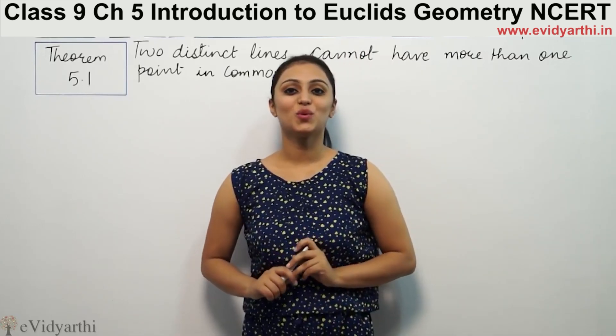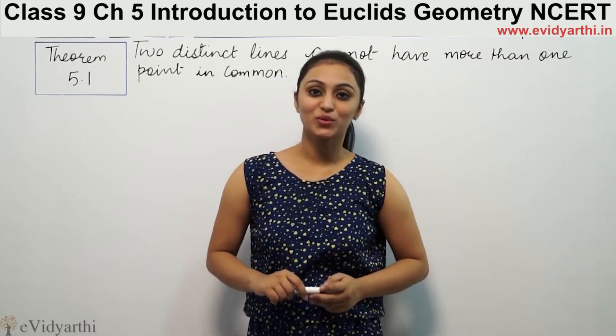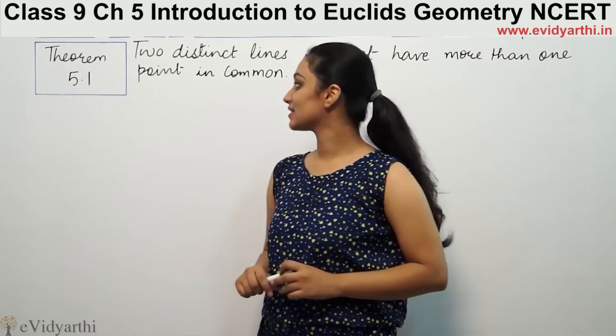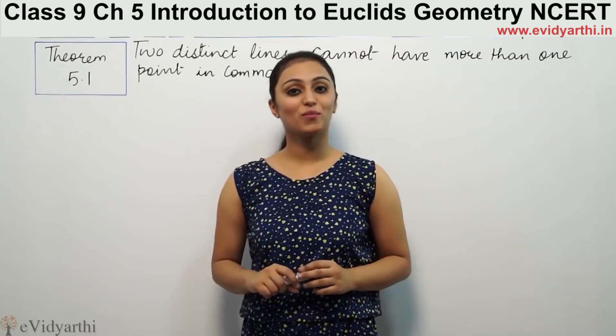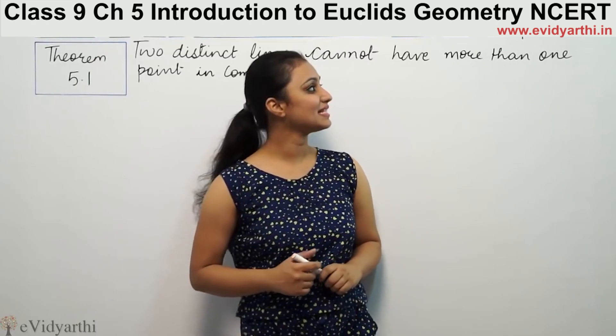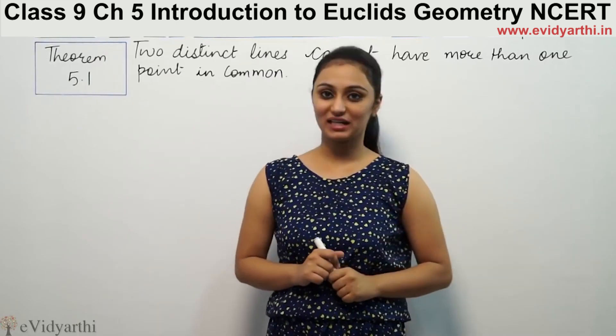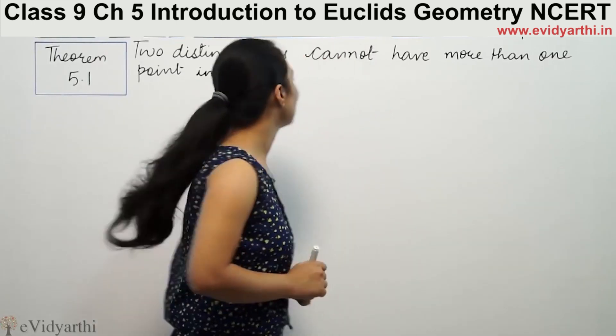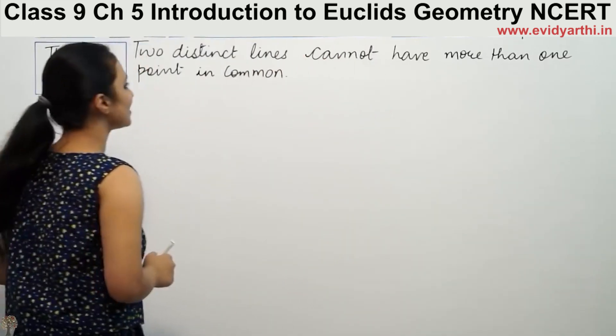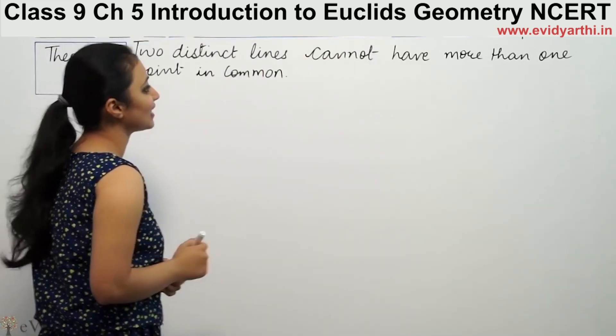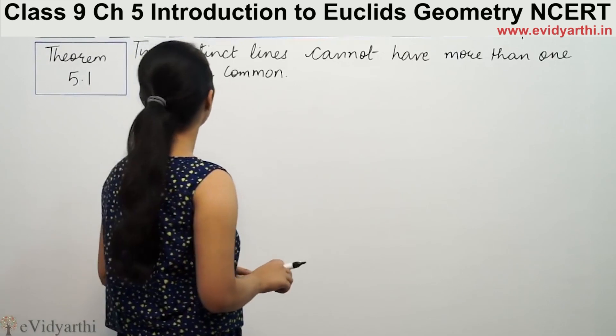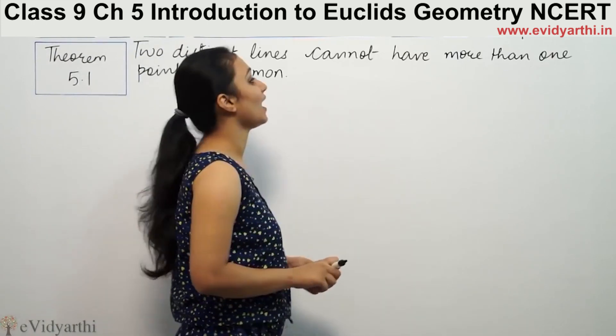Hi, this is Kujhbu with another theorem of Euclid's symmetry. This is theorem number 5.1 from NCERT page number 85. This says two distinct lines cannot have more than one point in common.